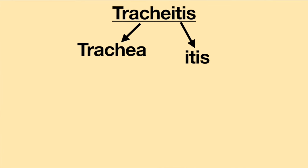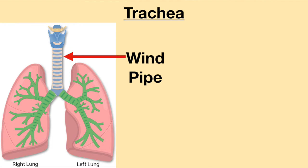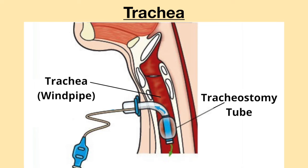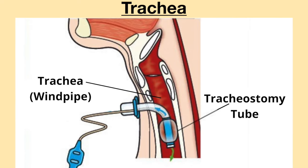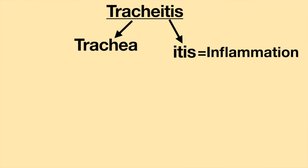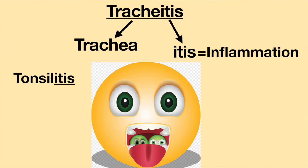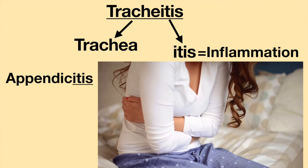Breaking down the word into its parts, tracheitis means trachea and itis. The trachea is often referred to as the windpipe. It is through the trachea in which a hole is created to place the tracheostomy tube. Itis simply means inflammation. You are probably familiar with other inflammatory conditions, such as sinusitis, which is the inflammation of the sinuses, tonsillitis, which is the inflammation of the tonsils, and appendicitis, which is the inflammation of the appendix.